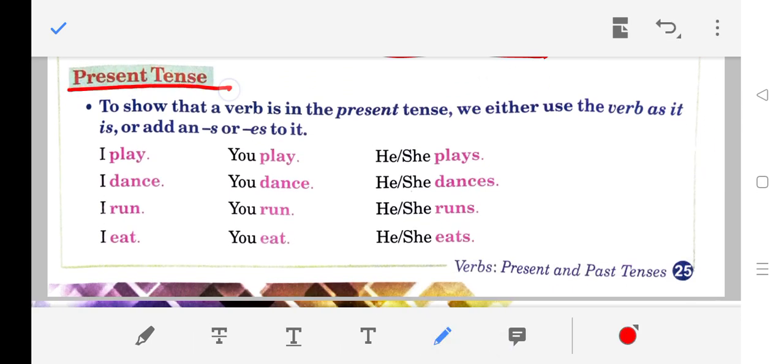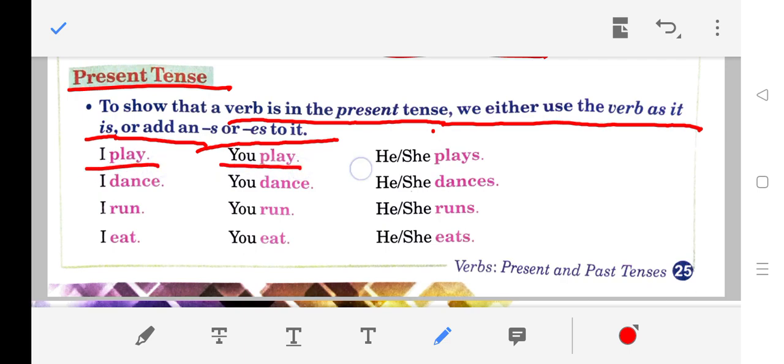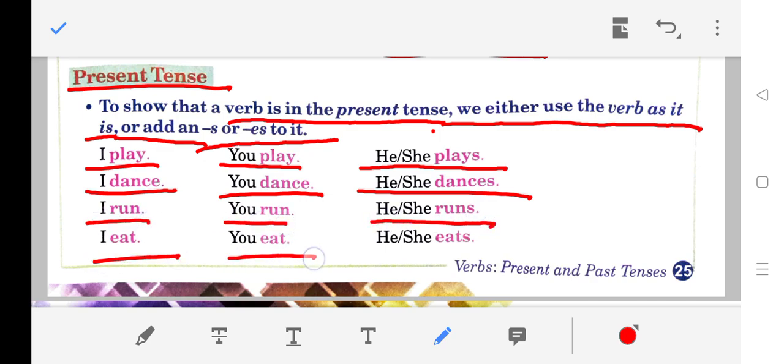Present Tense: To show that a verb is in the present, we either use the verb as it is, or add an 's' or 'es' to it. I play, you play, he/she plays. I dance, you dance, he/she dances. I run, you run, he/she runs. I eat, you eat, he/she eats.